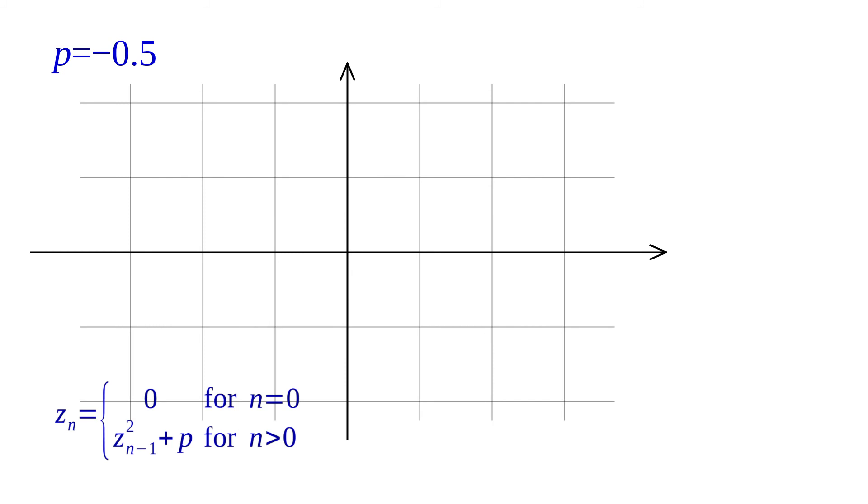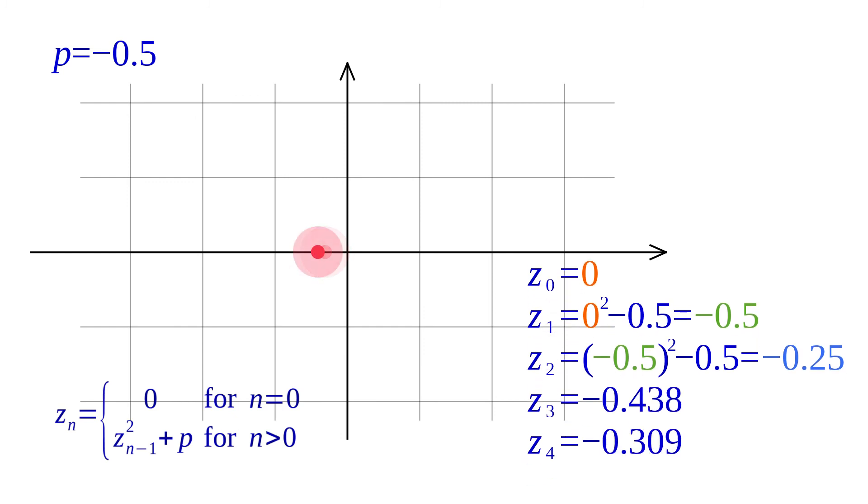For p equal to minus half, Z0 is 0 by definition. Z1 is 0 squared minus half, which is minus half. Z2 is minus half squared minus half, which is 1 fourth minus half, which is negative 1 fourth. Further terms are shown. This time the sequence converges to a finite number.